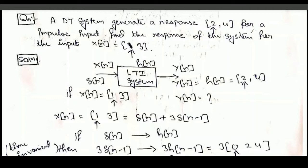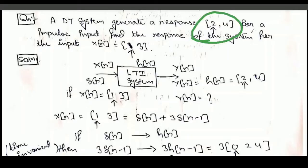In the previous lecture, we discussed LTI systems and impulse response. Here we discuss a question based on impulse response. The question is: a discrete time system generates a response {2, 4} for an impulse input. Find the response of the system for the input x[n] = {1, 3}.